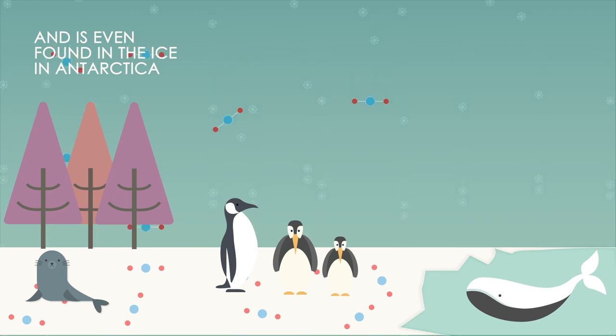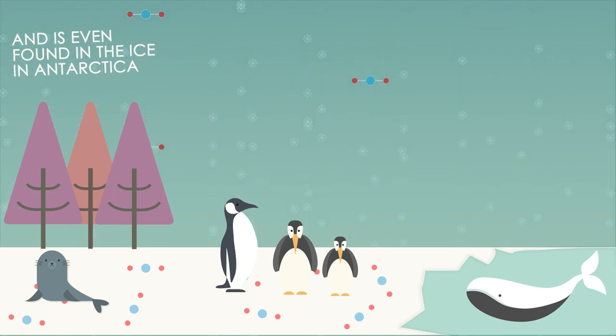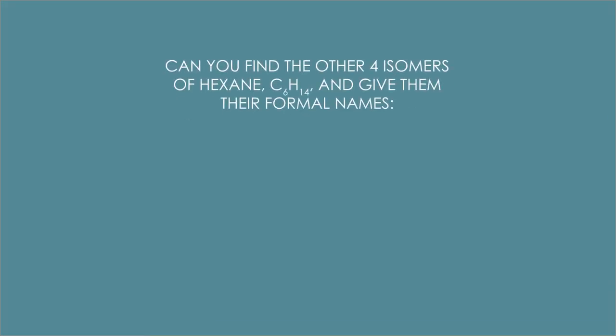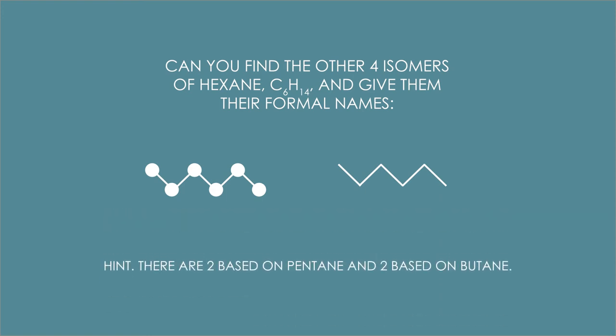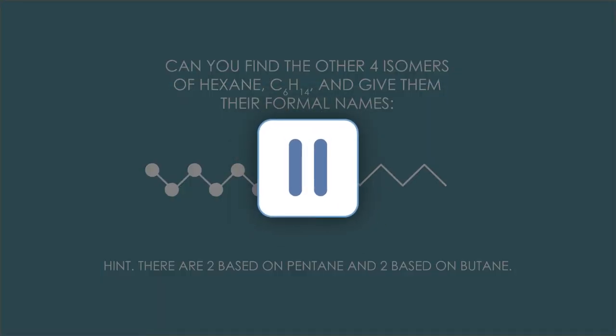So let's finish with a simpler example. Can you find the other four isomers of hexane, C6H14, and give them their formal names? I'll give you a hint — there are two based on pentane and two based on butane. Pause whilst you try to draw them out.